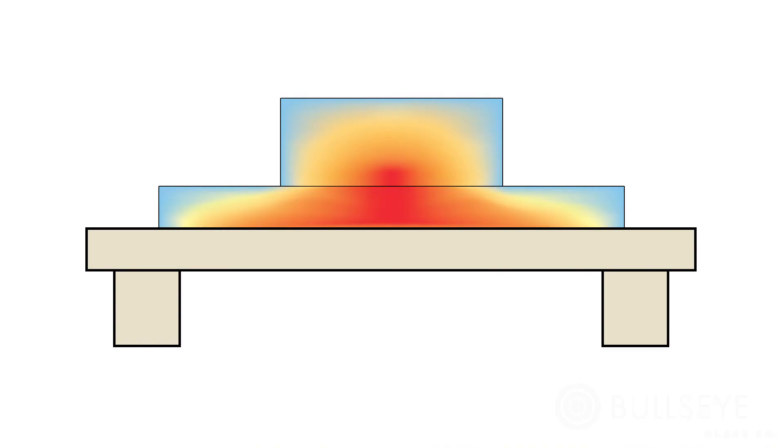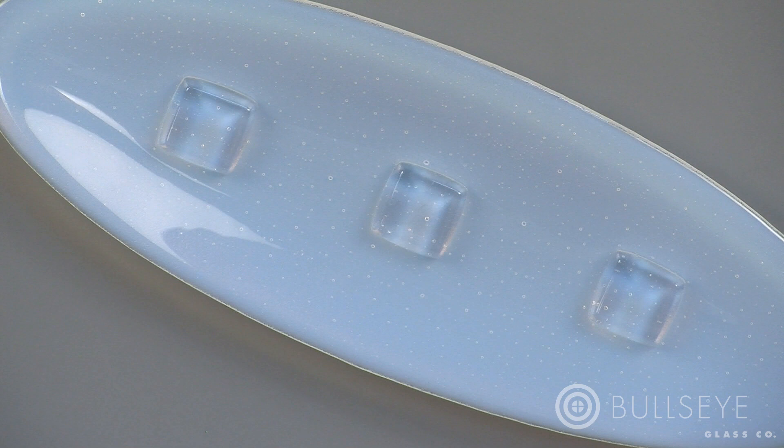Upon cooling, this thicker area will hold its heat longer, preventing the piece from cooling uniformly. To compensate for this, use an annealing cycle for a piece that is twice as thick as the fired piece will be in its thickest area.